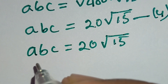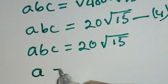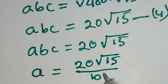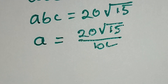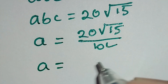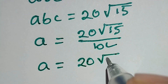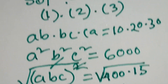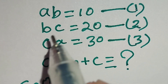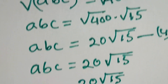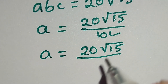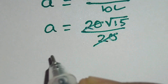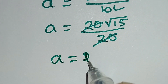From equation 4, ABC equals 20 square root of 15. This implies A equals 20 square root of 15 over BC. Since BC equals 20, we have A equals 20 square root of 15 over 20. This 20 and this 20 cancel out, so the value of A equals square root of 15.